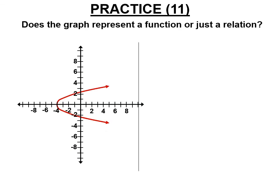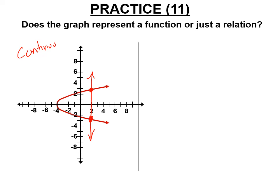Here's a U-shape on its side — a sideways parabola. Drawing a vertical line hits it in two places, so it fails the vertical line test. This is a continuous relation. When we study parabolas as functions later in the year, they'll never be on their side, because a sideways parabola creates duplicates in the domain and breaks the rules of functions.